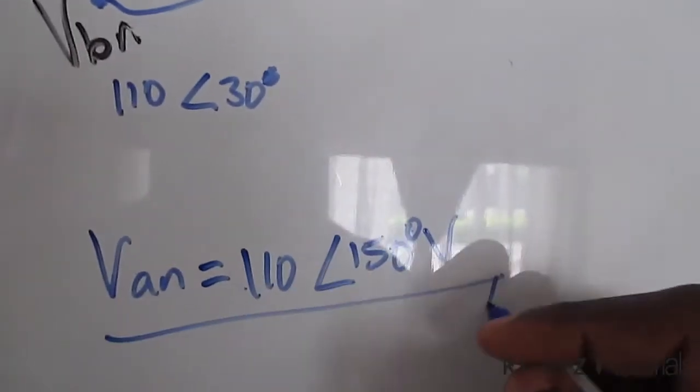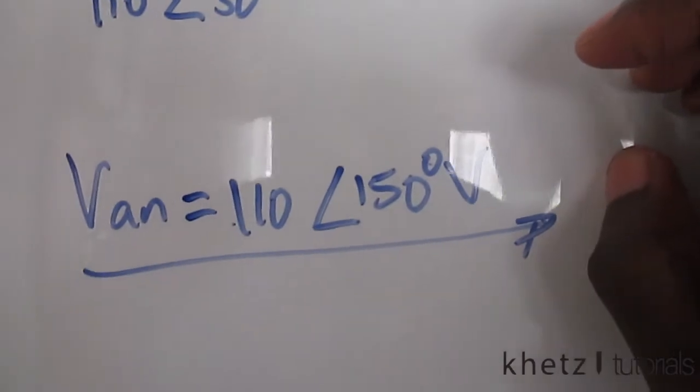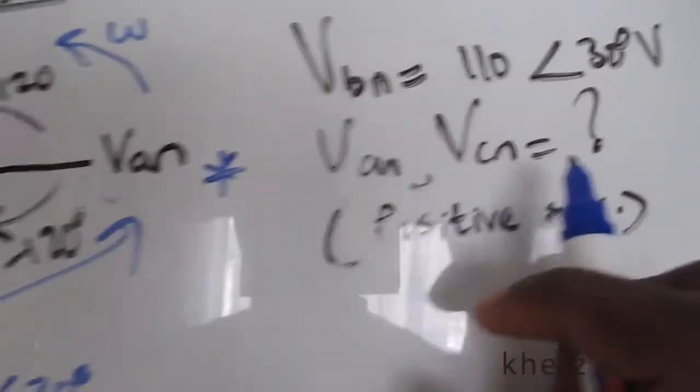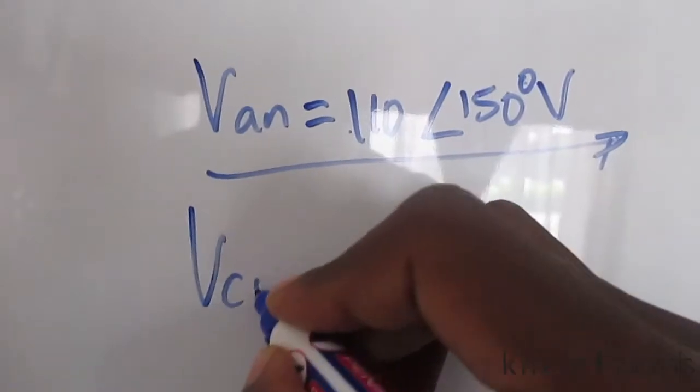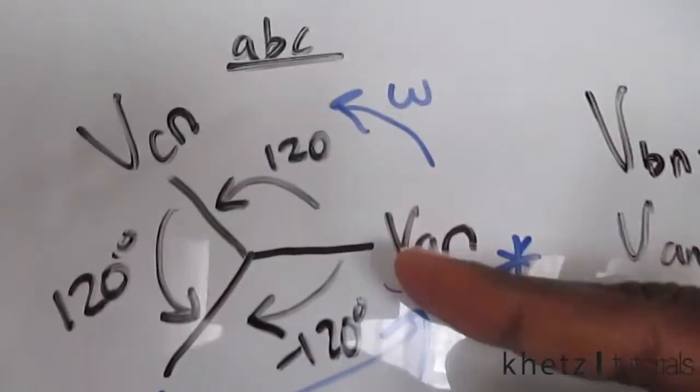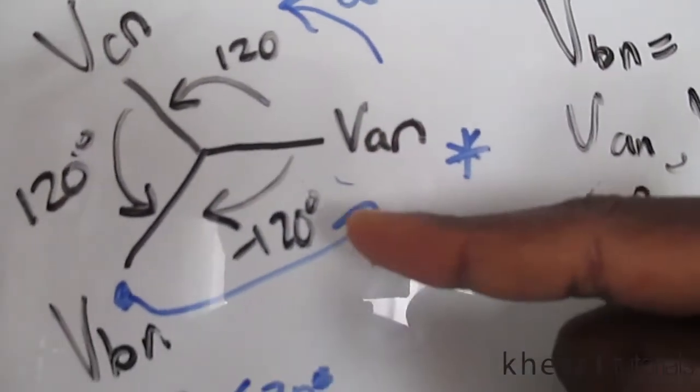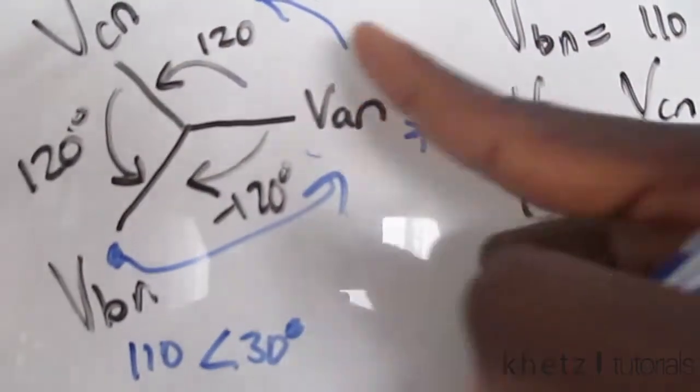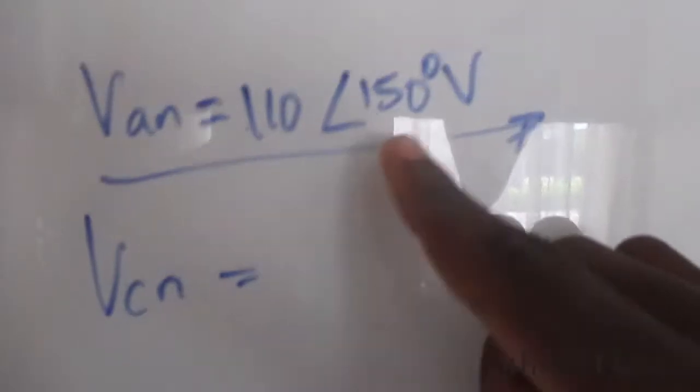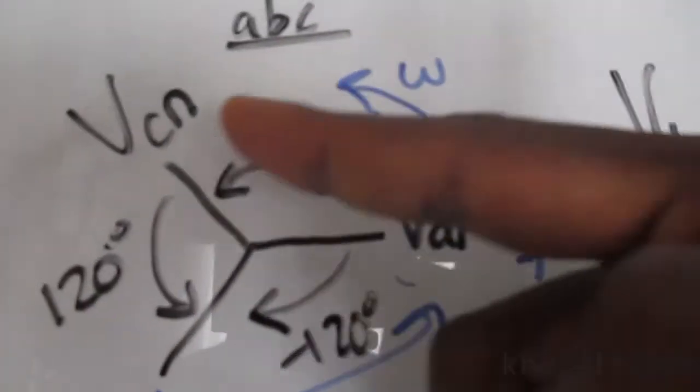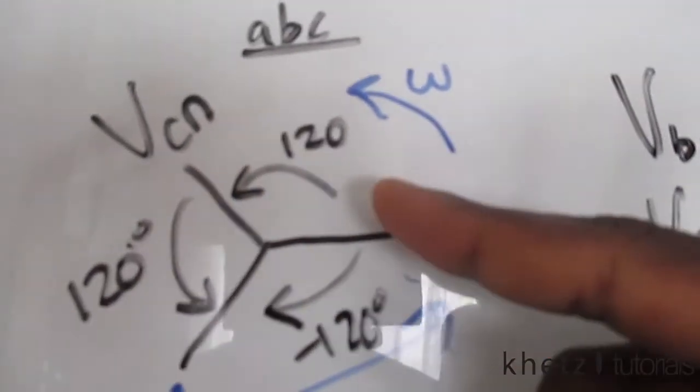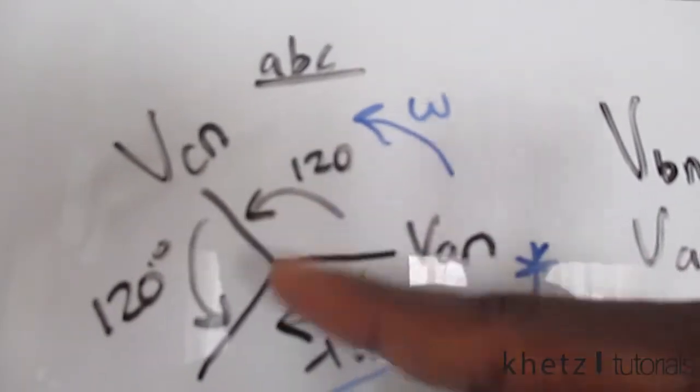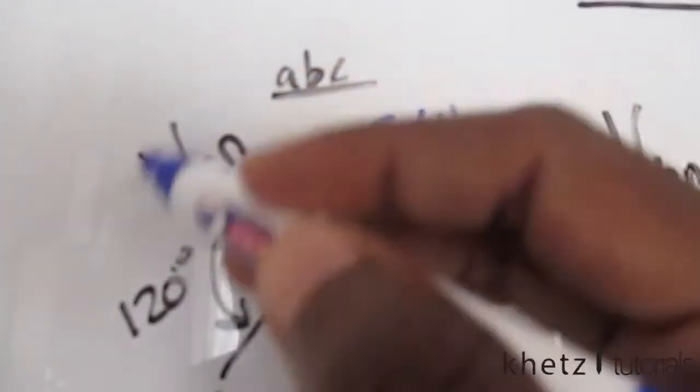Moving on to the next one which is VCN. Now we have VAN, you can either use this and that or just use the newly found VAN. I have VAN as that and you see that this VCN is actually 120 degrees more than this value.